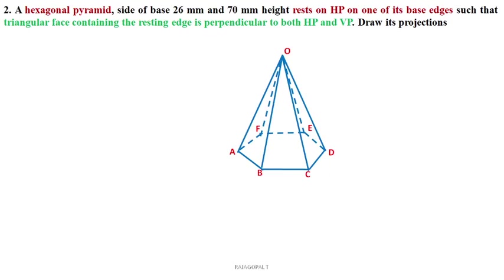Hi friends. In this video we will discuss one more problem related to hexagonal pyramid, where all the slant edges are connected through the apex or vertex. The question: hexagonal pyramid, side of face 26mm and 70mm height, rests on HP on one of its base edges.